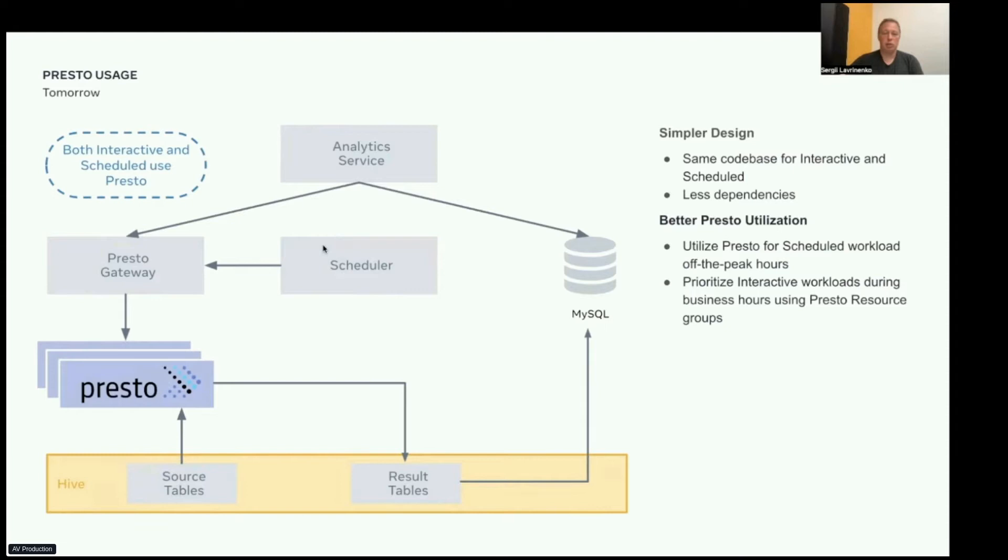The final design, as you can see, is quite similar. Presto computes statistics both for interactive and scheduled queries. But for scheduled queries, it stores intermediate results in the Hive table, which then is uploaded to MySQL database as in the previous design. This design allows us to remove code duplication and reduce dependencies on external services. We plan to use Presto to compute scheduled workload overnight and use Presto resource groups for query prioritization during business hours.